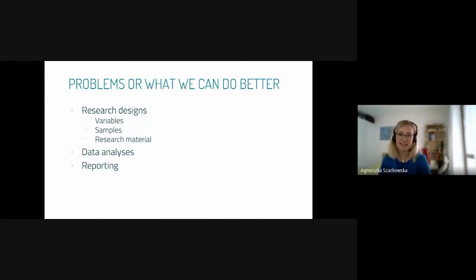For today I've identified three main potential issues that are problematic in media accessibility and audiovisual translation. First, research designs. We tend to use confounding variables, not define our variables, choose them in a particularly relevant way. Our samples are very small or not well chosen. The same applies to research materials. A whole area relates to data analysis. And also how we report the results of our studies.